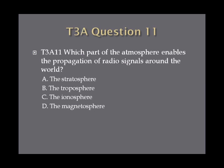Question 11: Which part of the atmosphere enables the propagation of radio signals around the world? A. The stratosphere. B. The troposphere. C. The ionosphere. Or D. The magnetosphere.